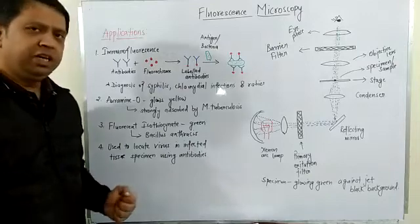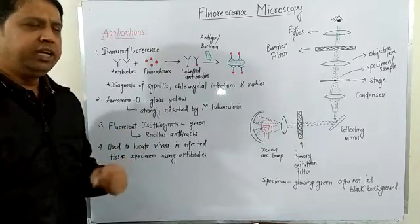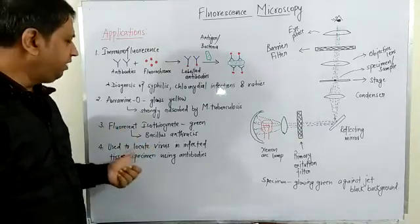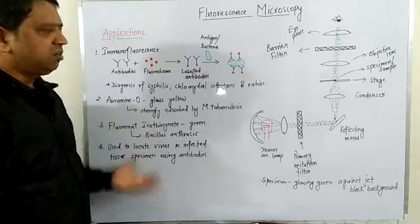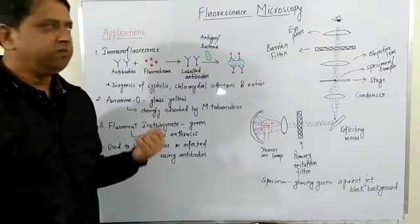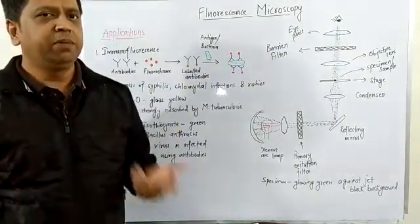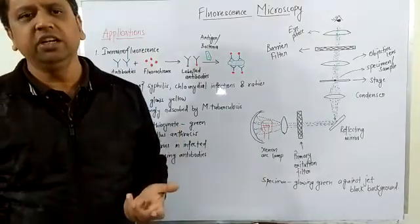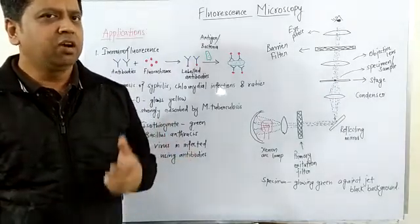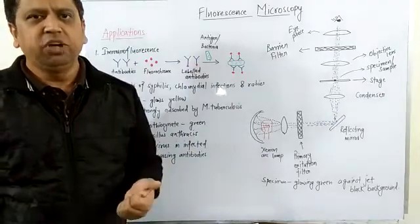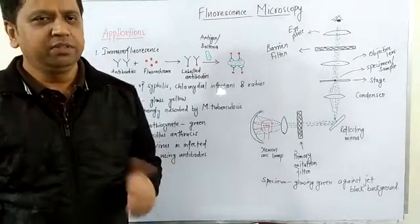Another application is locating viruses in infected tissue specimens using labeled antibodies. By labeling antibodies with fluorochromes, viruses present in the patient sample can be identified. These are the overall applications of fluorescence microscopy. Our next topic will be confocal microscopy, so please like, share with your colleagues, and stay with me. Thank you.